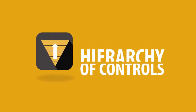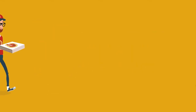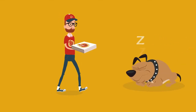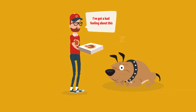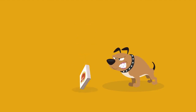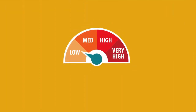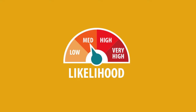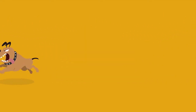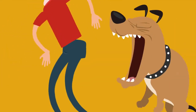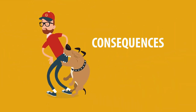The hierarchy of controls. The level of risk associated with an event can be established by assessing the chance of the event happening, likelihood, and the potential harm or damage the event could cause, consequences.